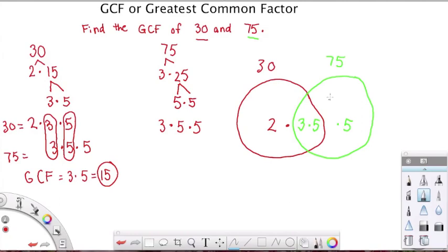Those factors represent 75. And when we multiply them all together, we get 75. And all these factors, 2 times 3 times 5, which are inside the red, they're the factors of 30. And we know that 2 times 3 is 6, and 6 times 5 is 30.